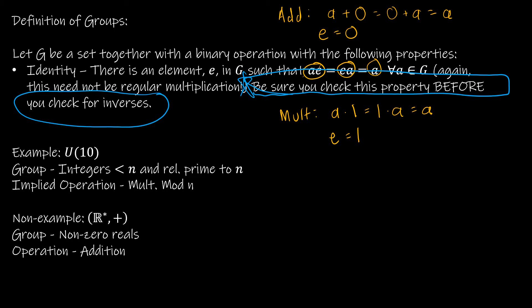Let's take a look at U10, the group of integers less than 10 and relatively prime to 10. So 1 is relatively prime to 10; 2 is not because 2 goes into both; 3 is; 4 is not; 5 is not; 6 is not; 7 is; 8 is not; 9 is. So the set for U10 is {1, 3, 7, 9}.